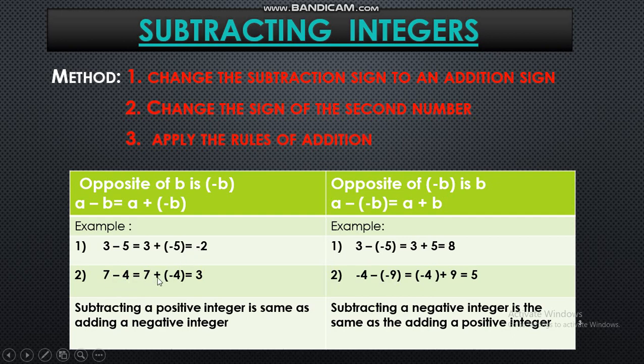7 minus 4, 7 plus minus 4, so answer is 3. Now 3 minus minus 5, so change this minus to the plus and this negative 5 to plus 5. So actually it is 3 plus 5 which is equal to 8. Minus 4 minus minus 9, minus changes to plus and this minus 9 changes to plus 9. So minus 4 plus 9, find out the difference, 9 minus 5 is 5 and 9 is bigger so answer is positive 5. Why? Because subtracting an integer means adding its opposite. Clear?